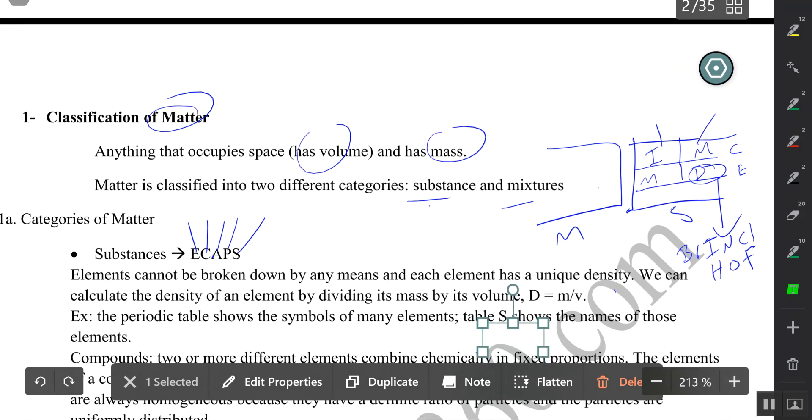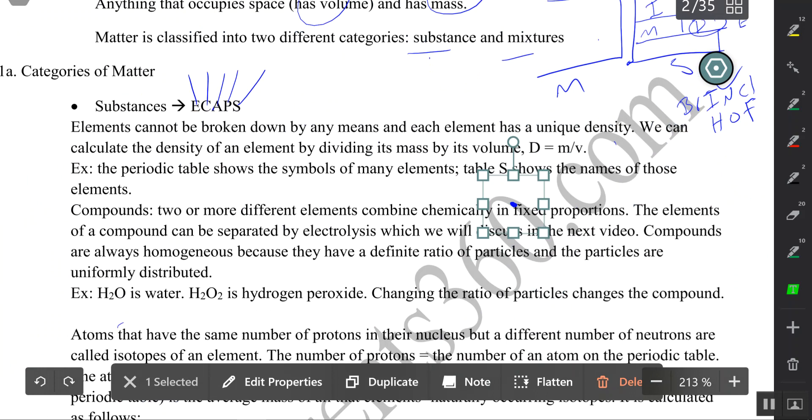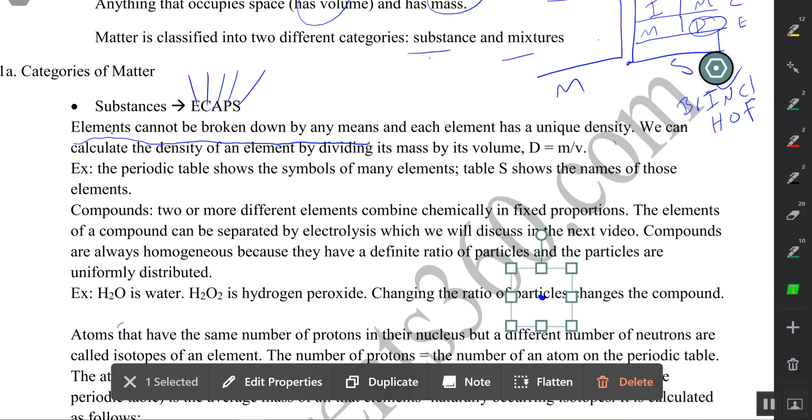Some more information about elements and compounds. Elements cannot be broken down by any means. So if you have a piece of copper and you try to crush it or hammer it down, you're always going to have copper, just smaller pieces of copper.